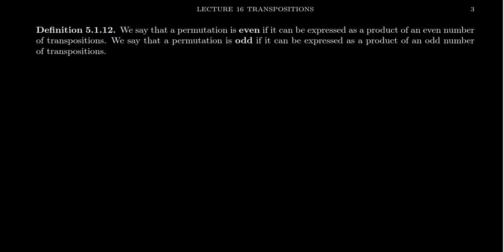This proves our theorem and leads to our definition. A permutation is even if it can be expressed as a product of an even number of transpositions — it doesn't matter how many, just an even amount. A permutation is odd if it can be expressed as a product of an odd number of transpositions. So there are two types of permutations: even and odd.